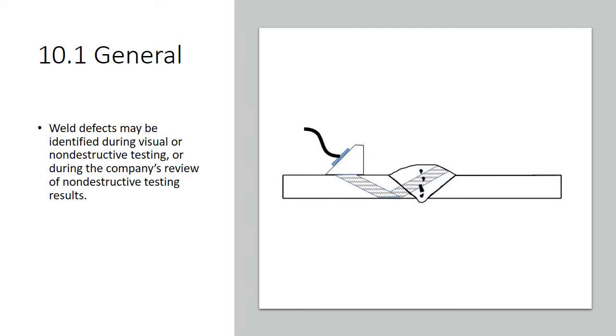General. Weld defects may be identified during visual or non-destructive testing, or during the company's review of non-destructive testing results.